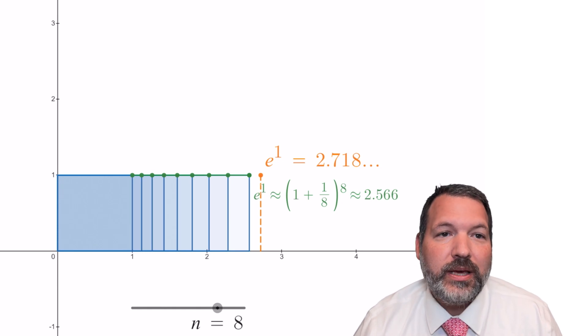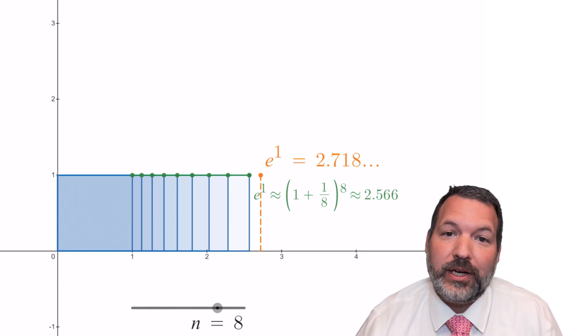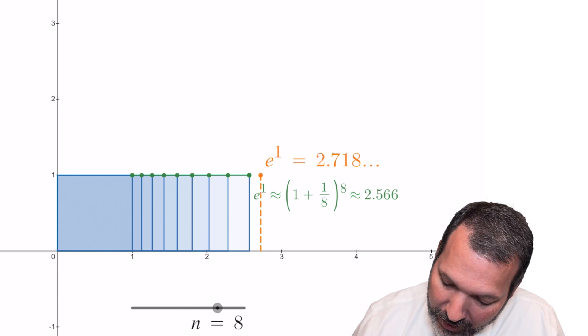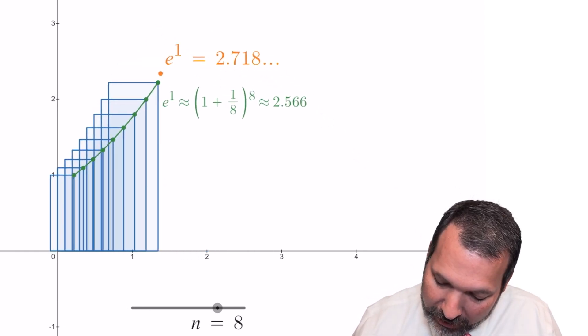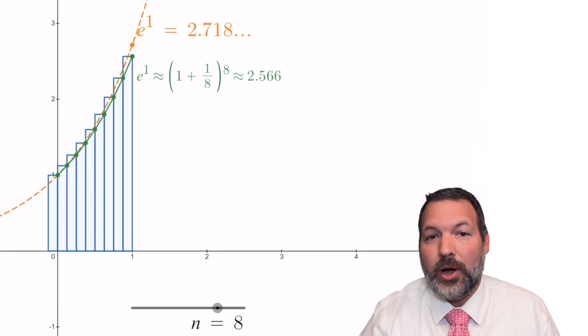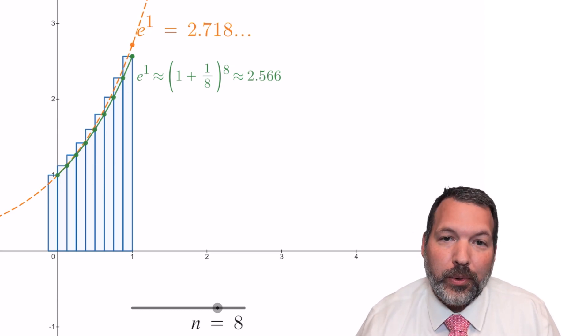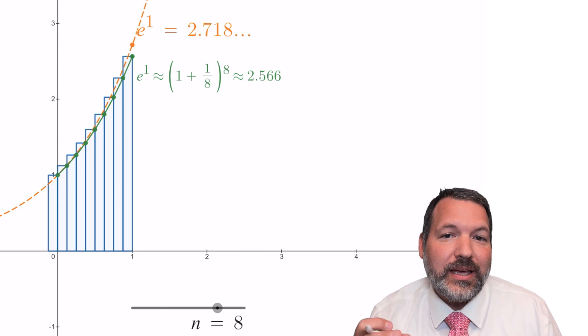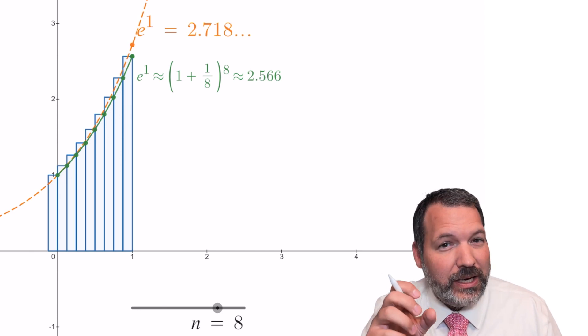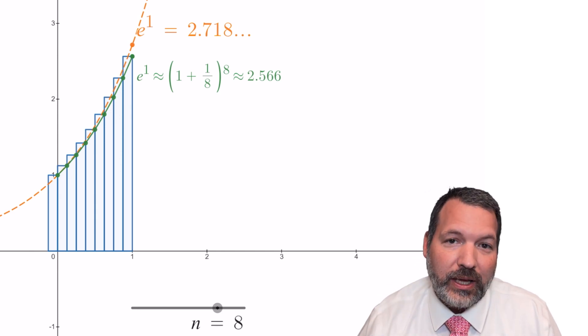And in fact, that special number E is the base for what we call the exponential function. If we were to take these rectangles and actually set them up so that we were looking at the outputs rather than just looking at them along the x-axis, we would see the exponential curve emerge.